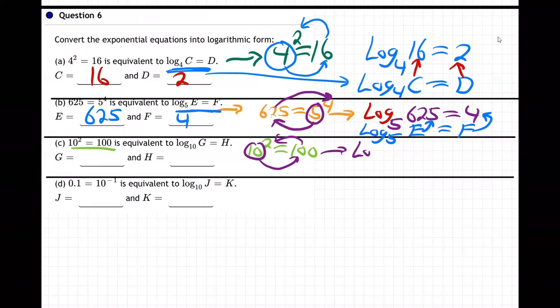So that'll become, it'll change to log base 10. The base remains the same. The base of the log is the base of the exponential. The base is the base. But then comes the 100 and then the 2. How do we know? Because it tells us 10, 100, 2. 10, 100, 2.